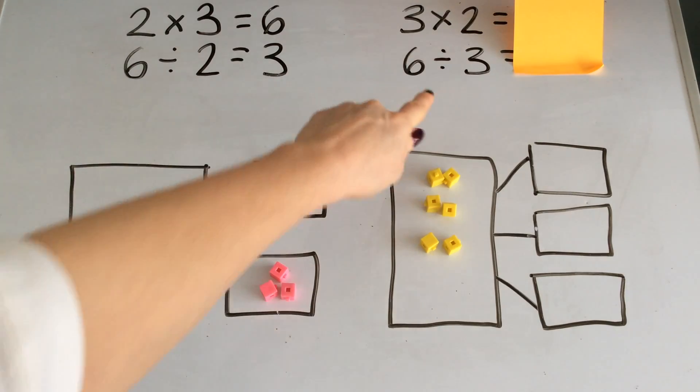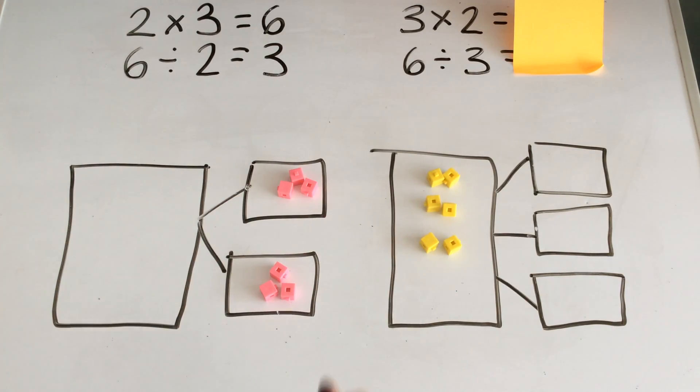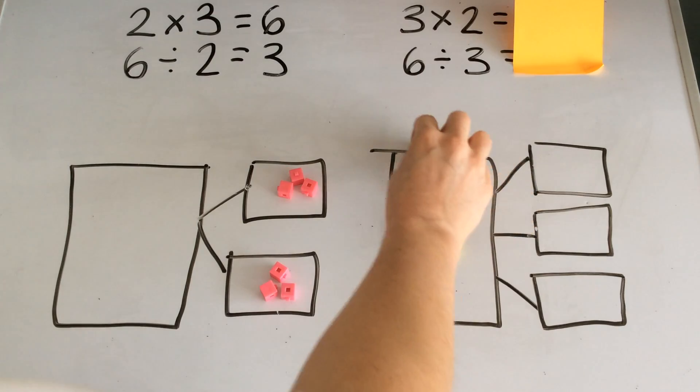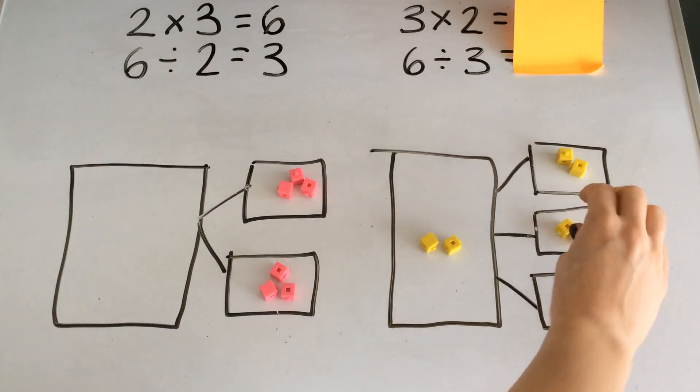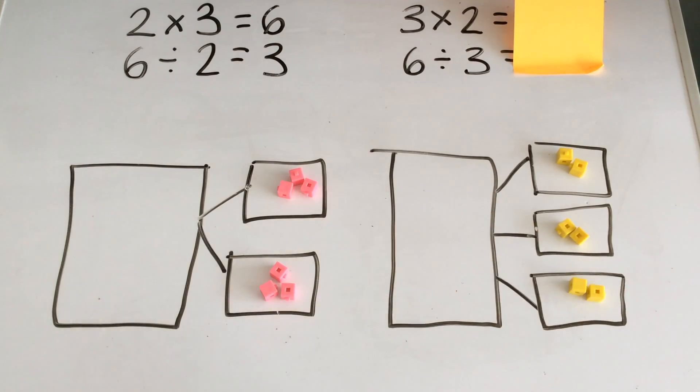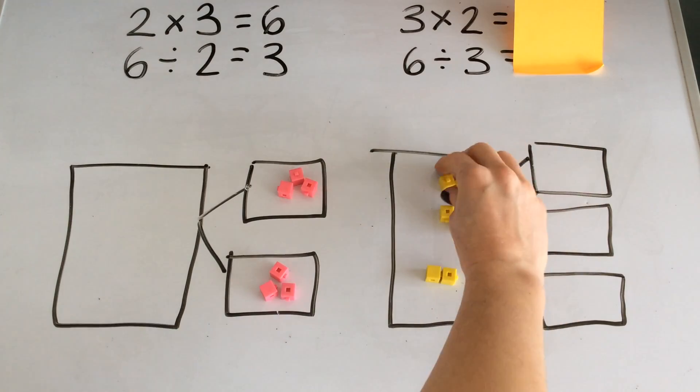If I wanted to find 6 divided by 3 into 3 equal parts, I could have 2 for you, 2 for you, and 2 for you. I could divide by grouping or I could divide by sharing.